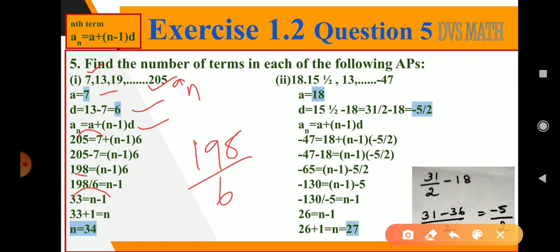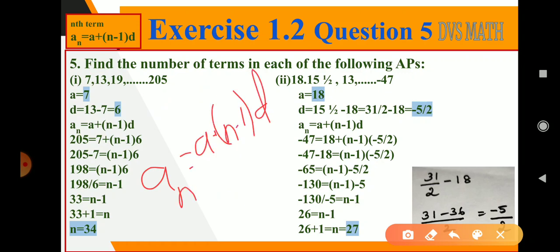You can check the answer by taking the formula an is equal to a plus n minus 1 into d. Here substitute n equals 34, you find out an value, you will get 205 only.